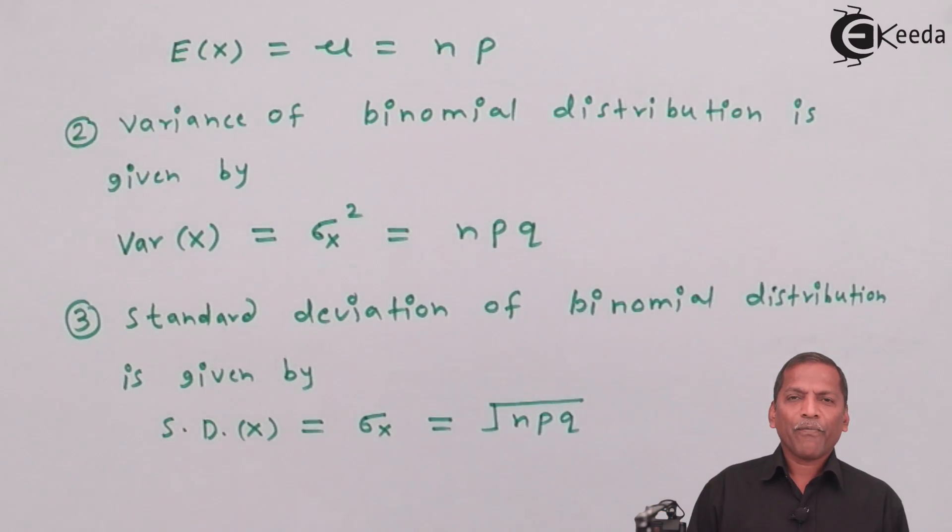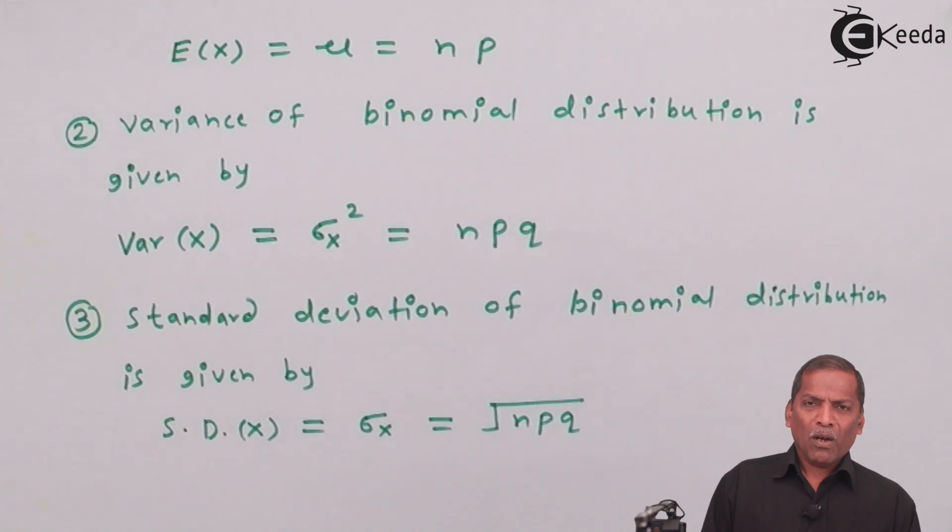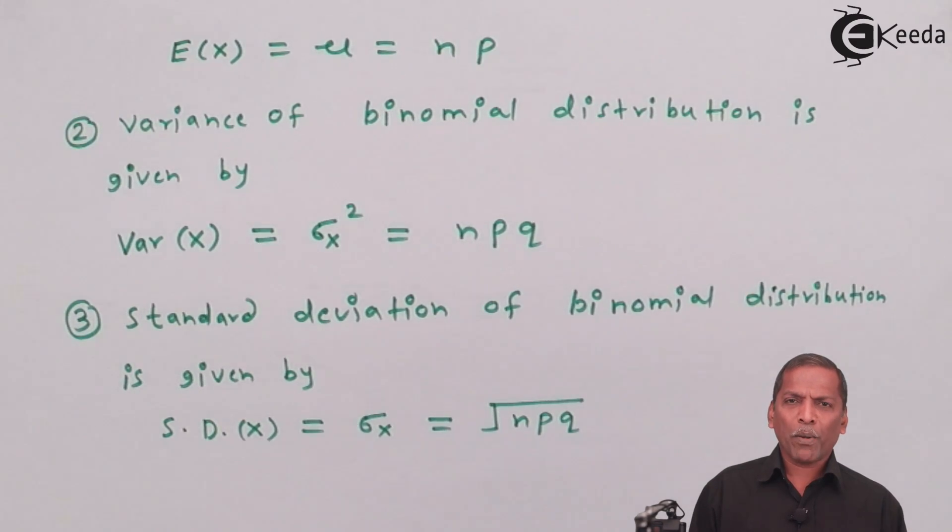Where n represents number of trials, P represents probability of success, and q represents probability of failure. Now by using these three formulas, we can solve many problems which are based on binomial distribution. Thank you.